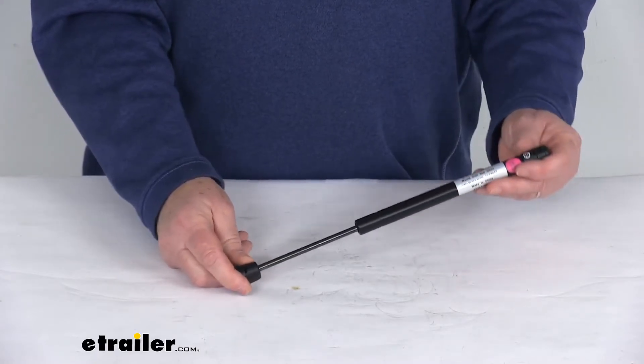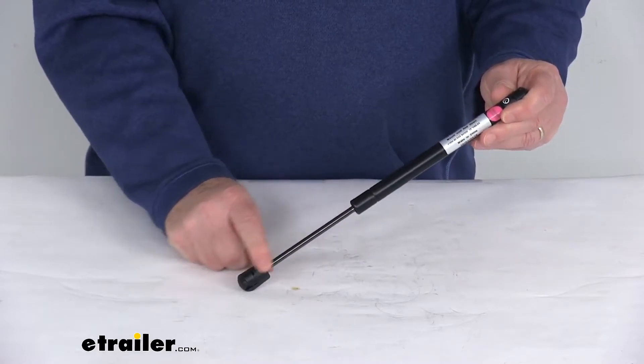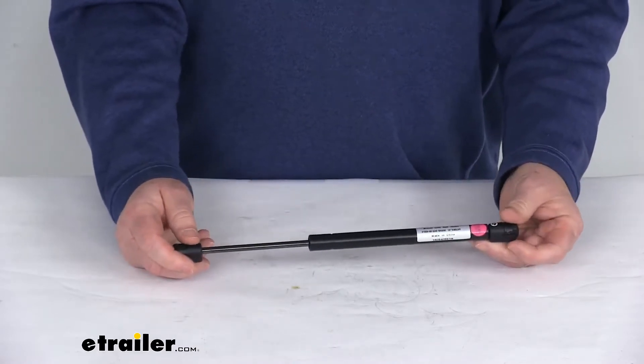When you do install this, you want to make sure this inner rod is facing down and it is always recommended to replace the gas shocks in pairs.